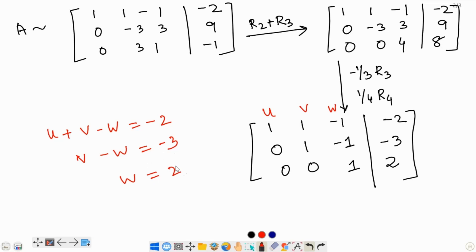So, in this form we automatically get the solution, isn't it? So, now that we have w, let us plug it into the second equation to get v. So, v minus w or v minus 2 equals negative 3. Now, let us add 2 to both sides to get rid of this negative 2. So, negative 3 plus 2 is negative 1. Therefore, v is equal to negative 1.